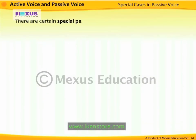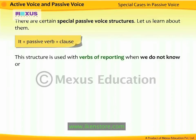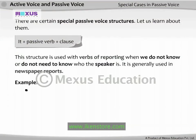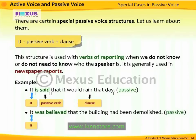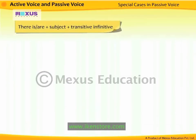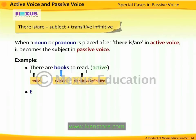There are certain special passive voice structures. 'It + passive verb + clause' is used with verbs of reporting when we do not know or do not need to know who the speaker is. It is generally used in newspaper reports. For example, 'It is said that it would rain that day' and 'It was believed that the building had been demolished.' Another structure is 'There is/There are + subject + transitive infinitive.' When a noun or pronoun is placed after 'there is' or 'there are' in active voice, it becomes the subject in passive voice. For example, 'There are books to read' becomes 'Books are to be read.'